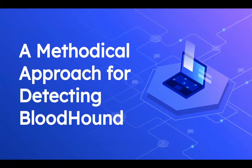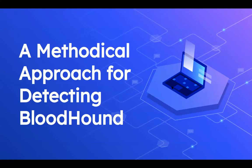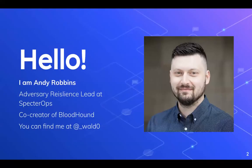The title of our webinar today is 'A Methodical Approach for Detecting Bloodhound.' My name is Andy Robbins, I'm the Adversary Resilience Lead at Specter Ops — I use Bloodhound to help our customers figure out how to cut down on attack paths that the tool can find in an efficient and practical way. I'm one of the co-creators of Bloodhound, and you can find me on Twitter at that link.